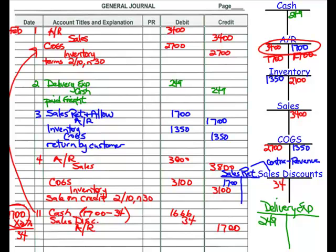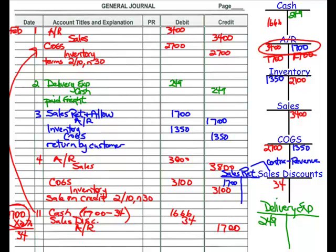The next transaction on the 23rd: we sold merchandise to a customer for cash, $1,200; cost of sale, $950. This time we debit cash instead of accounts receivable, because we're receiving the cash right away from the customer. We also credit the sales account for $1,200. When we sell merchandise, we also record the reduction in inventory: debit cost of goods sold $950, and credit the inventory account $950.